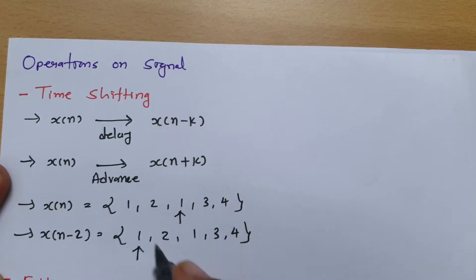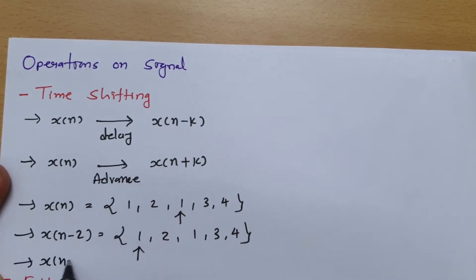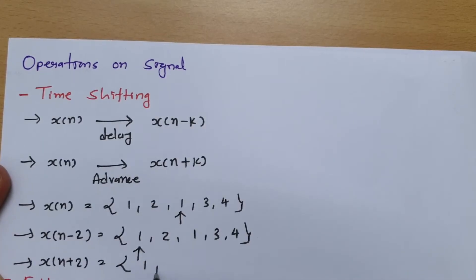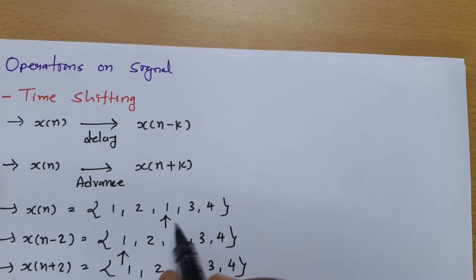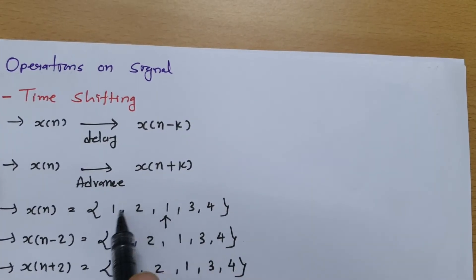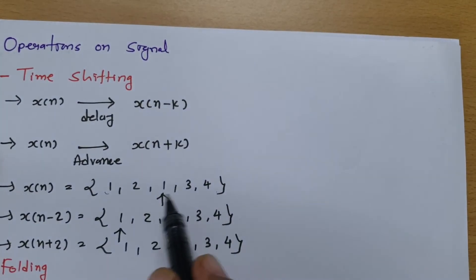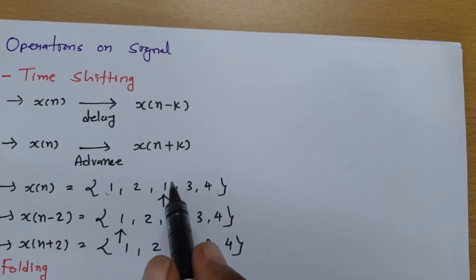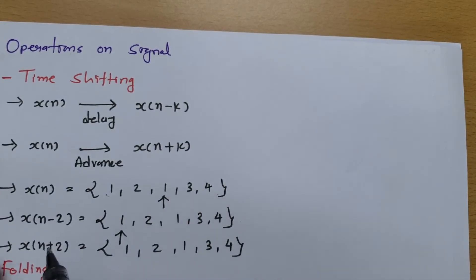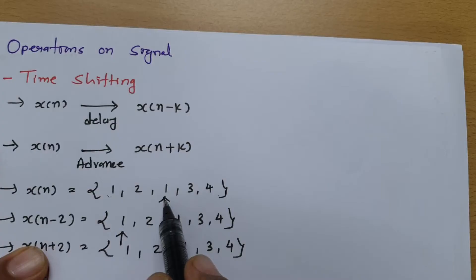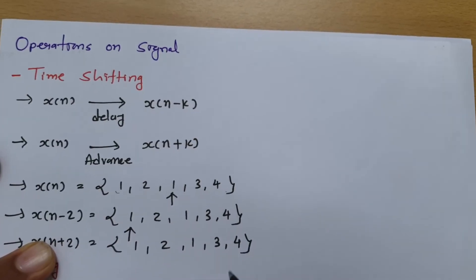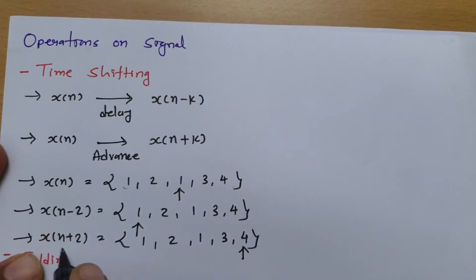Similarly, for the advancing operation, if I compute x of n plus 2, the sequence remains {1, 2, 1, 3, 4}, but the reference gets shifted 2 positions to the left. That is how advancing works.